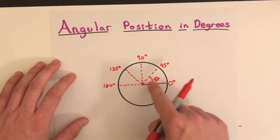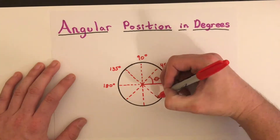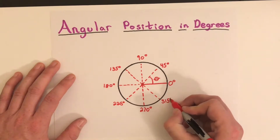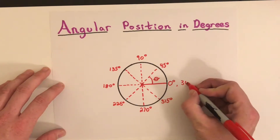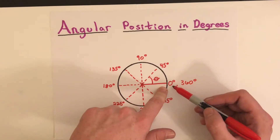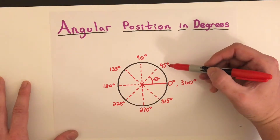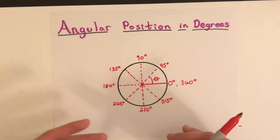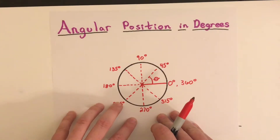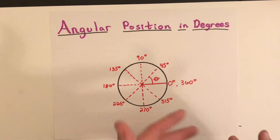We can go around the whole circle in 45-degree segments all the way back around. One complete rotation is 360 degrees. This starting point is our zero, and if something went all the way around, that's 360 degrees. Angular position in degrees is pretty simple, but it's not really the standard way to measure angular position on a circle — the standard way is using radians.